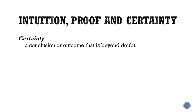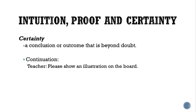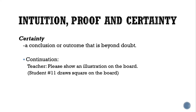And lastly, certainty. Certainty is a conclusion or outcome that is beyond doubt. Continuing the example: the teacher says, 'Please show an illustration on the board,' and the student draws a square. Since we already had the proof, we are now very certain in our answer — we have no doubt about it. So these three are related to each other: intuition (instinct), mathematical proof (evidence), and certainty (no doubt, very certain in the answer).